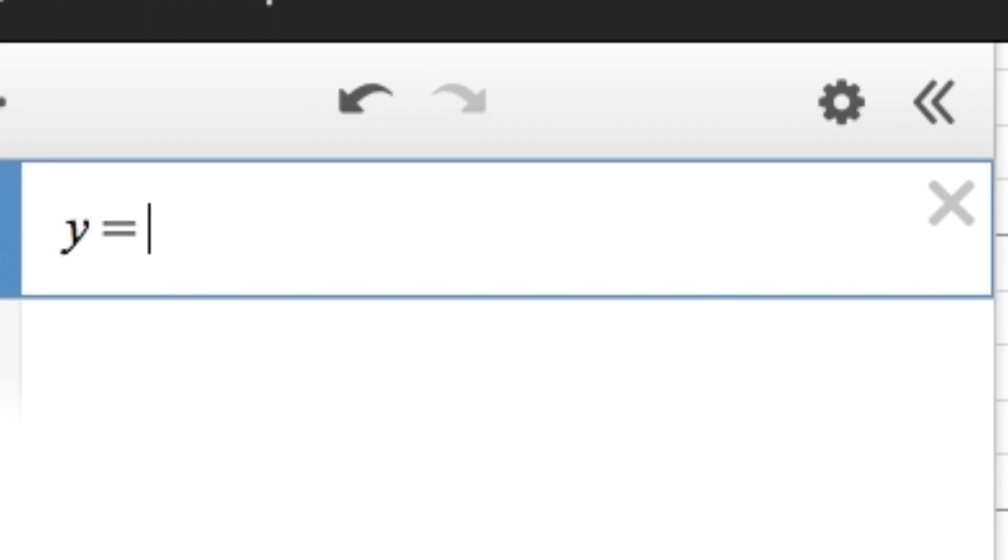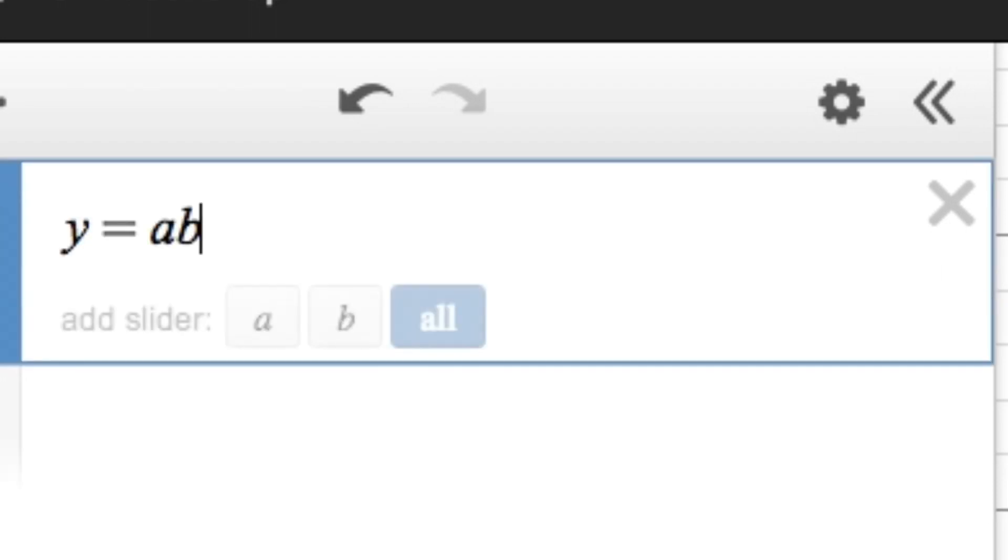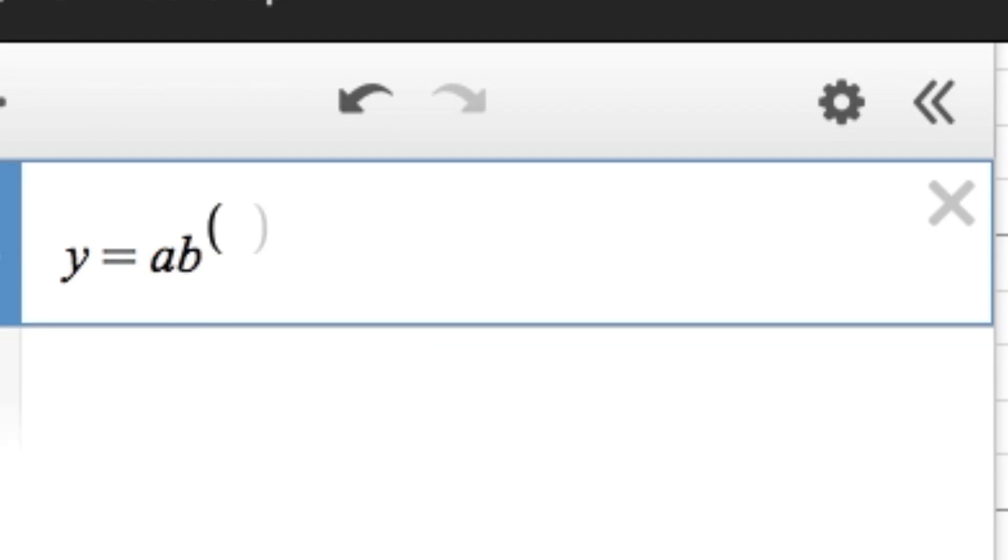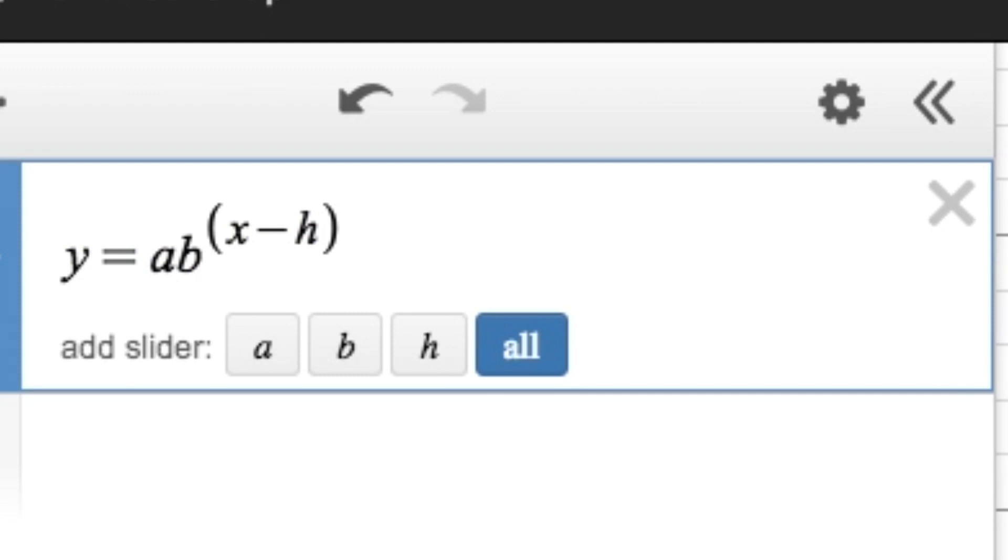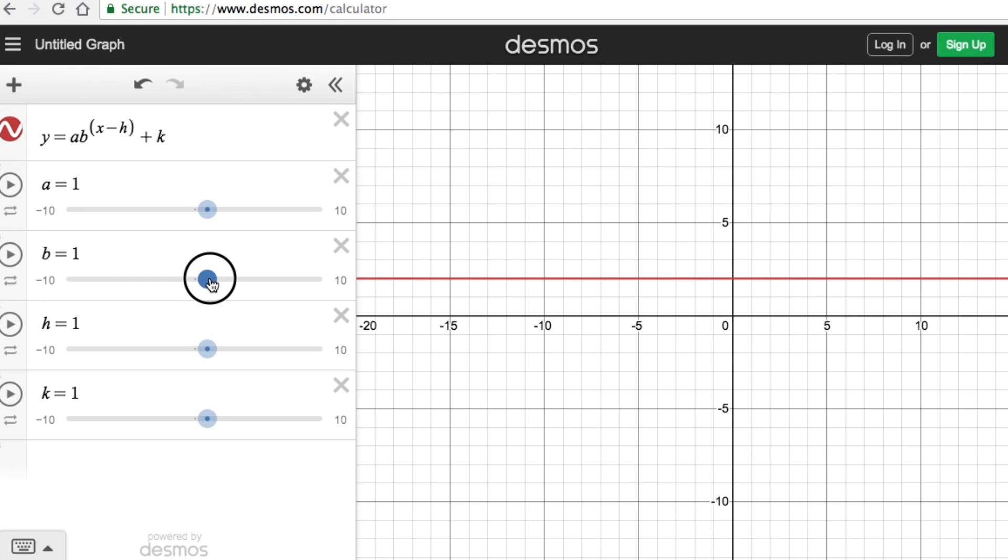Please remember that the graphing form of an exponential function is y equals a times b raised to the power of (x minus h) plus k, where x and y are variables and a, b, h, and k are parameters. We're going to add all of these sliders here.